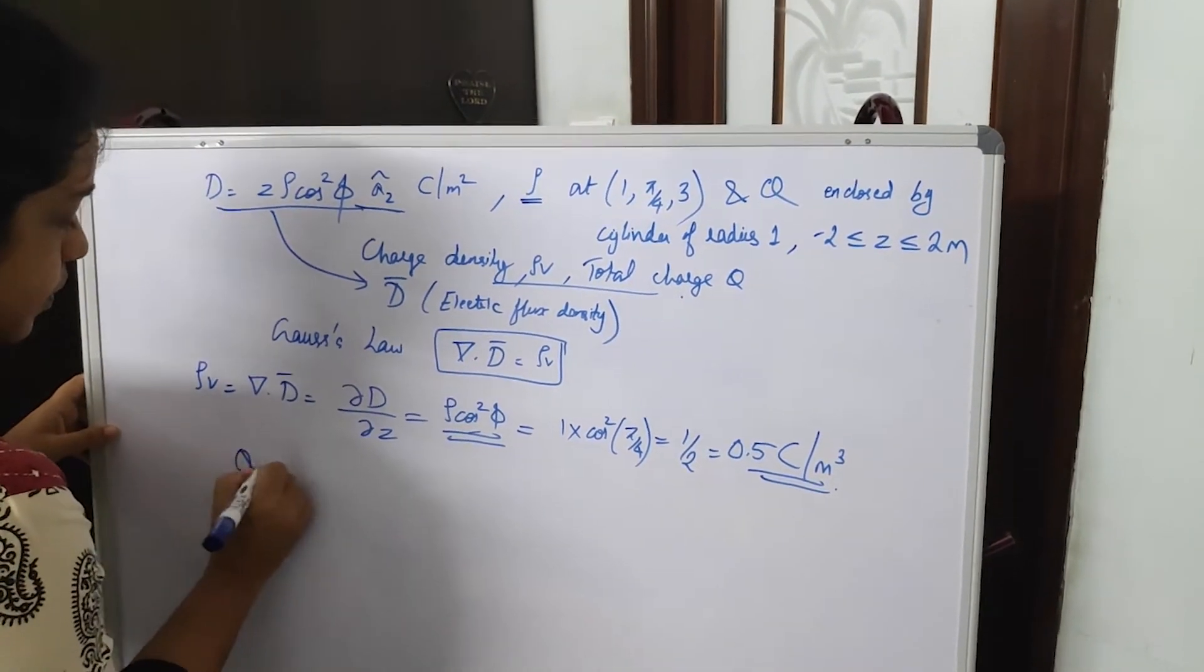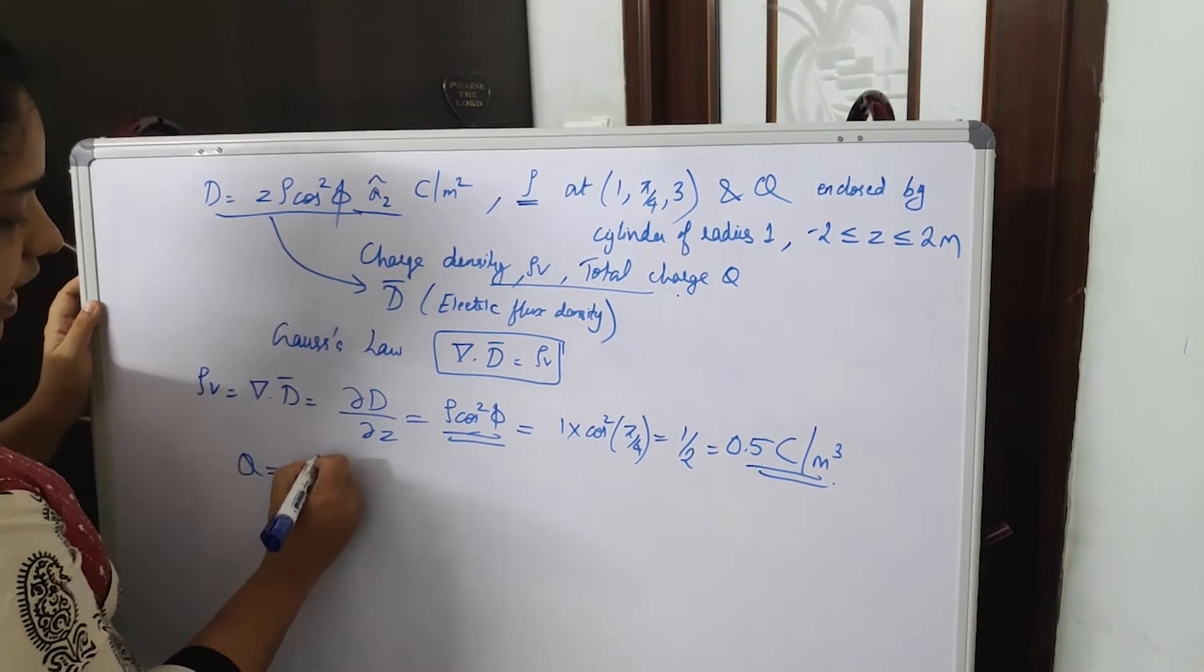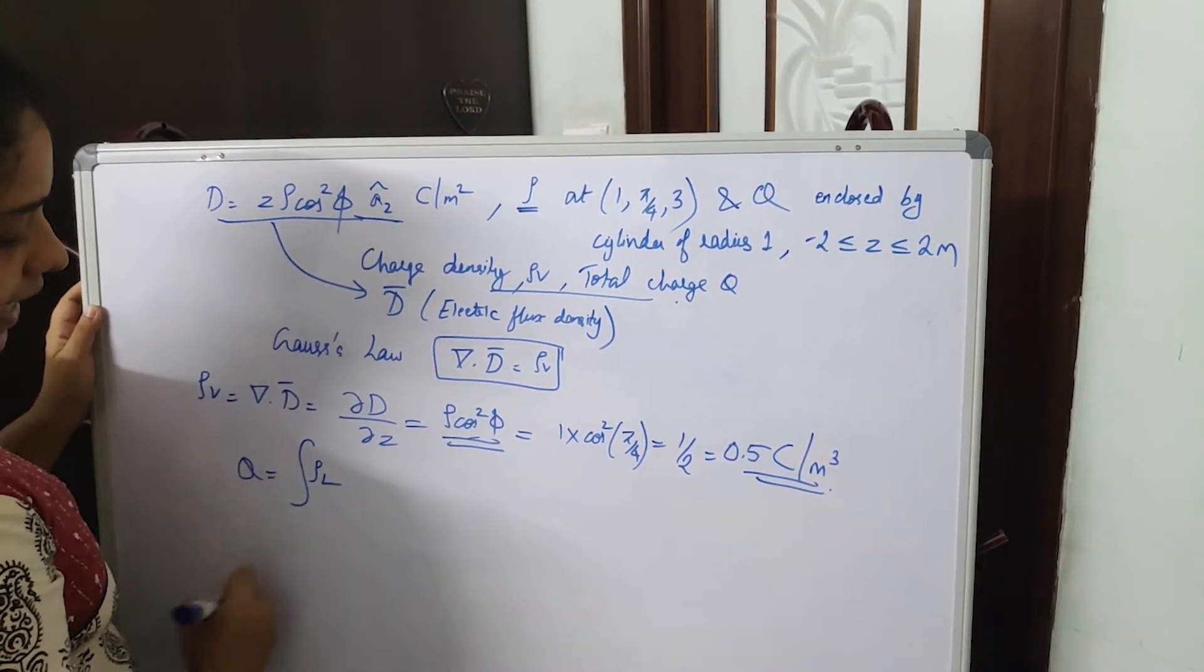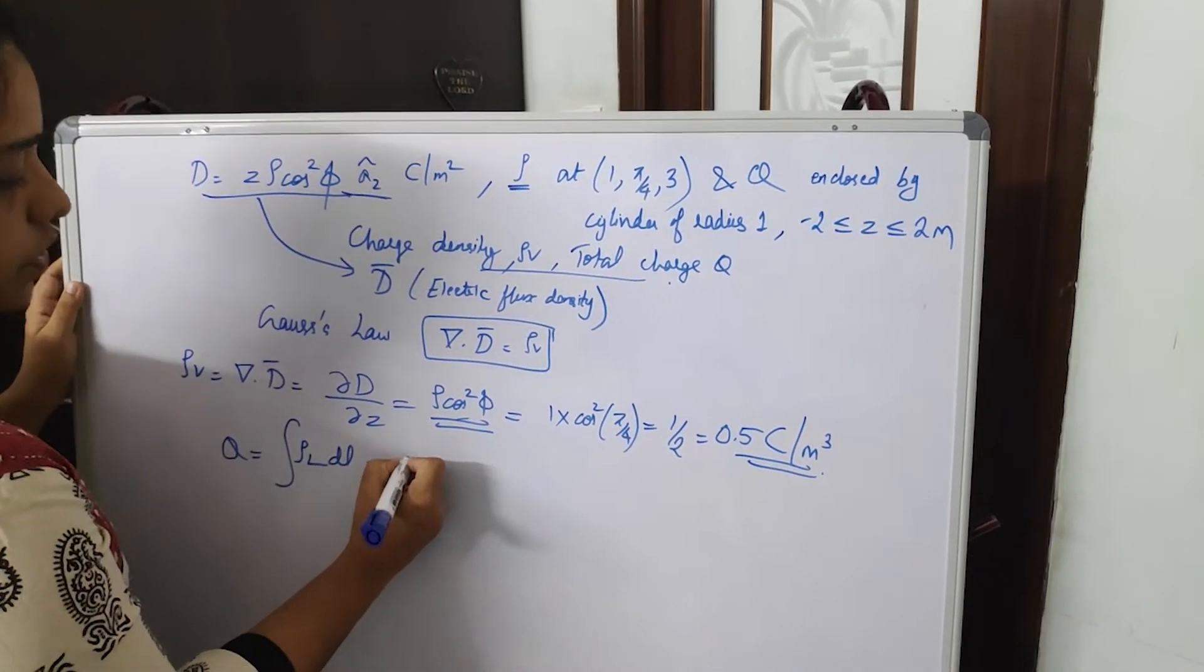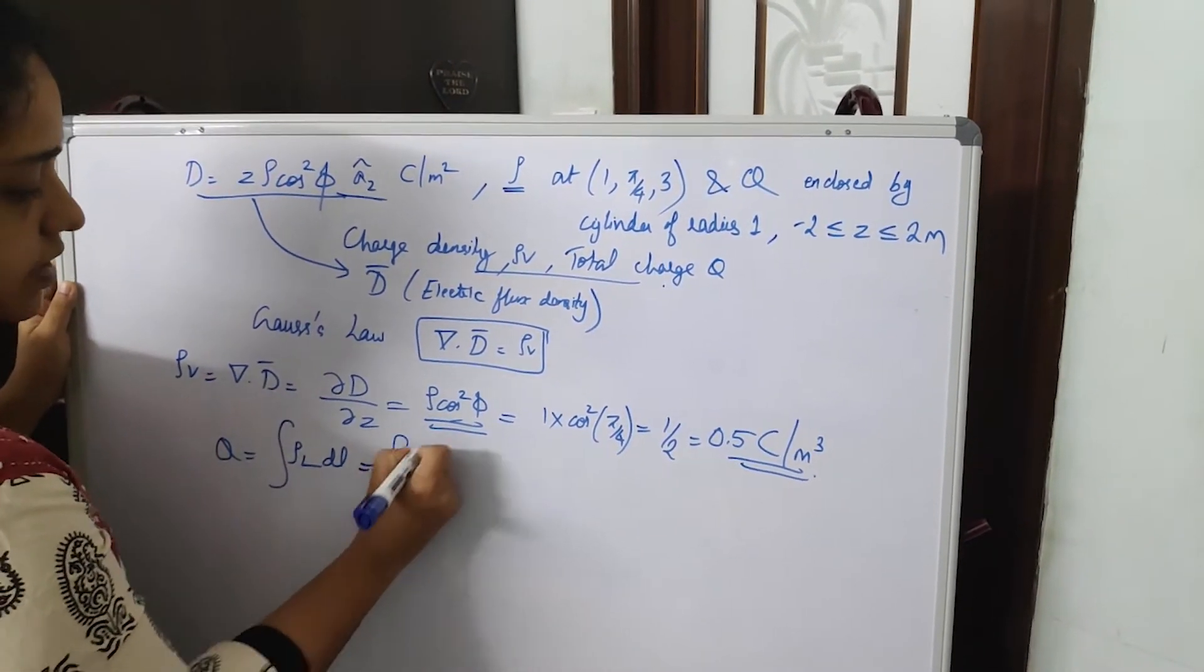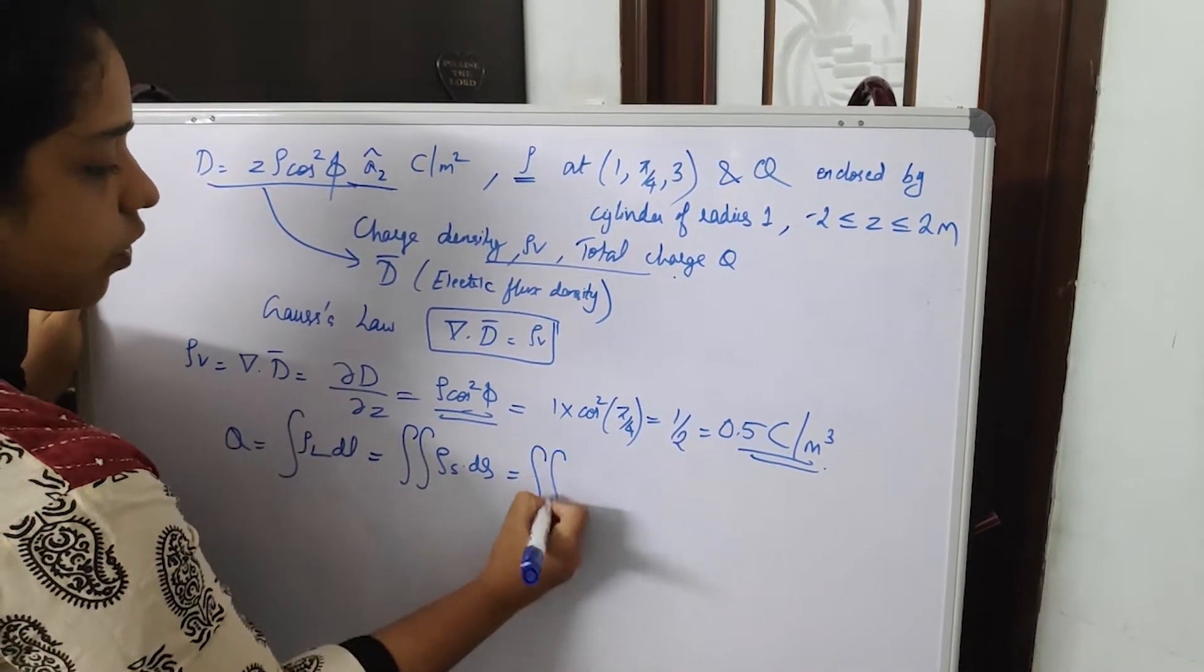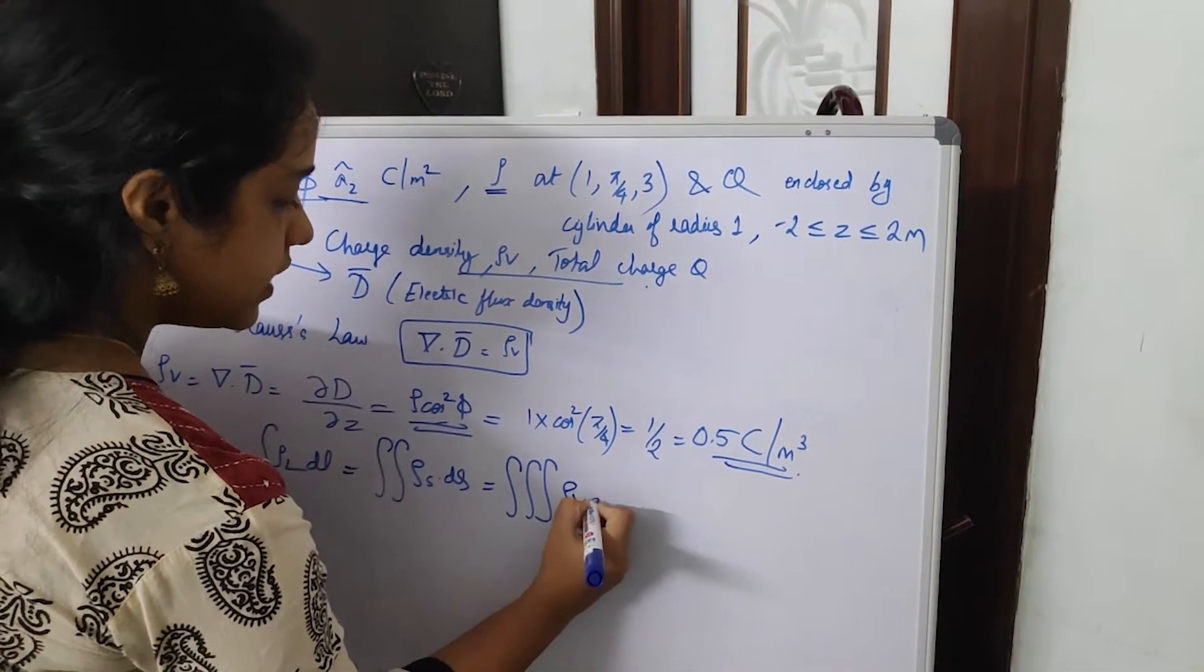Now to calculate Q, to calculate charge: if you are given a line charge or charge density per unit length, you can take the line integral rho L DL. This is also equivalent to, if you are given the surface charge, it will be rho S DS. Similarly, if you are given the volume charge density, it will be rho V DV.